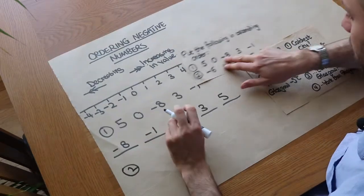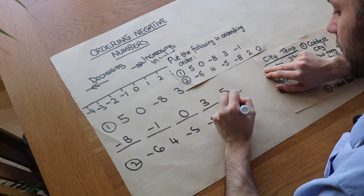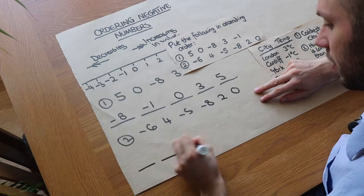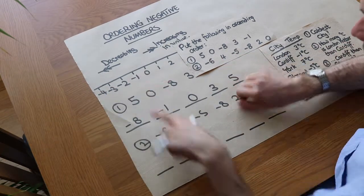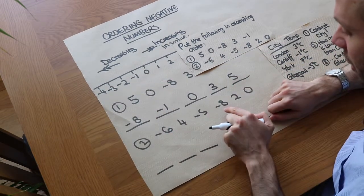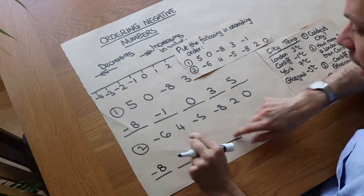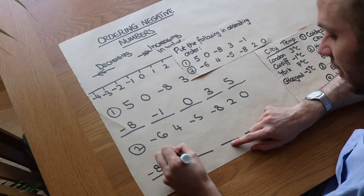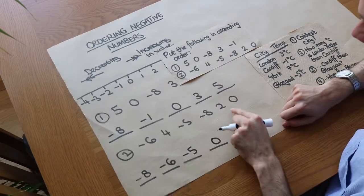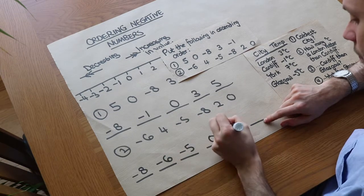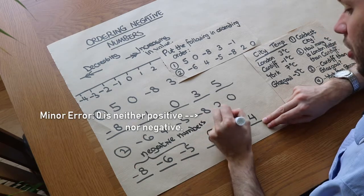For the second example we've got minus six, four, minus five, minus eight, two, and zero. It's going to be one of the three negative numbers with the smallest value, and we want the one furthest from zero — the largest number after the minus. That's eight again, so minus eight is smallest. Then minus six is next, then minus five, then zero, then the positive numbers: two and then four. These are known as negative numbers and these are known as positive numbers.